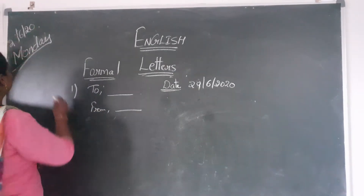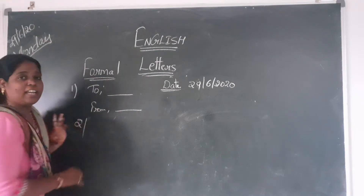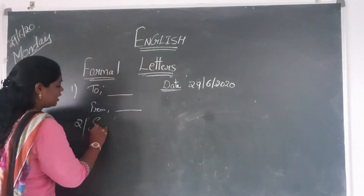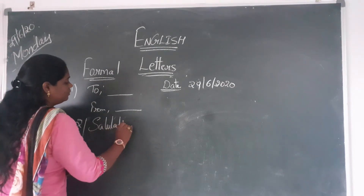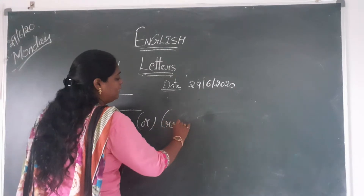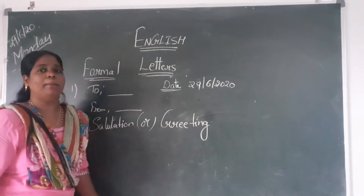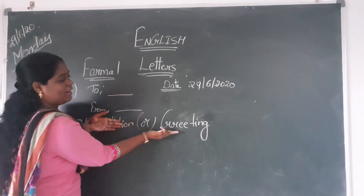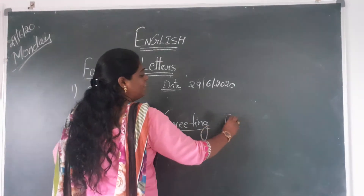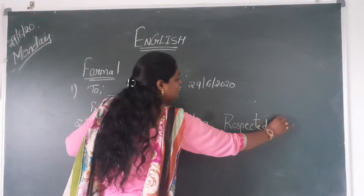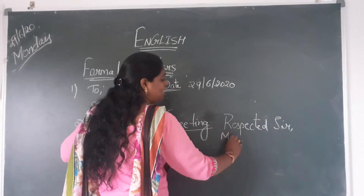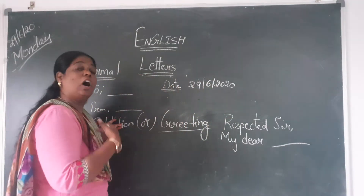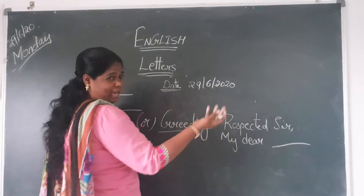The second thing is the salutation. What is a salutation? Salutation means it is a greeting part. For example, when writing a formal letter, after completing the address, the second part is the greeting. You can write 'Respected Sir' or 'Respected Ma'am' or 'My dear so-and-so.'